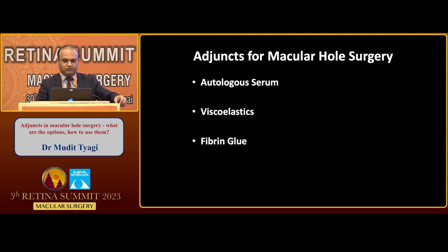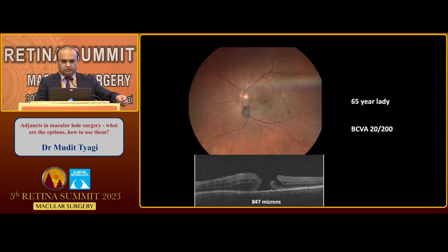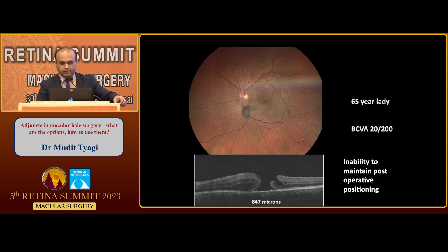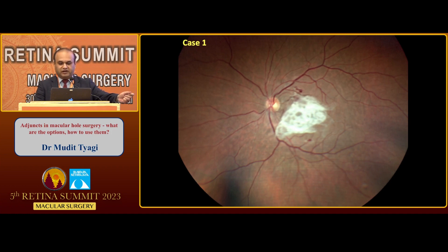Moving on to fibrin glue, which is what we have been using for some of our patients — specifically patients who are unable to maintain positioning for one reason or the other. This was a lady who had kyphoscoliosis, had some spinal problems, and could not maintain positioning in any sort of way. She presented with a visual acuity of 20/200 and a large macular hole. What we did was an ILM peeling and placed a coagulum of fibrin glue. Like we discussed about tamponade, fibrin glue prevents fluid from ingressing in, and by its contractile force helps bring tissue together, also providing a scaffold for glial tissue proliferation.